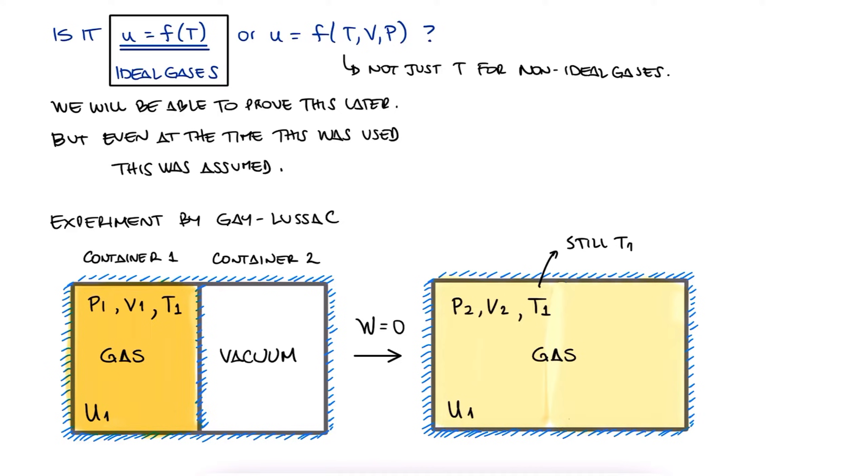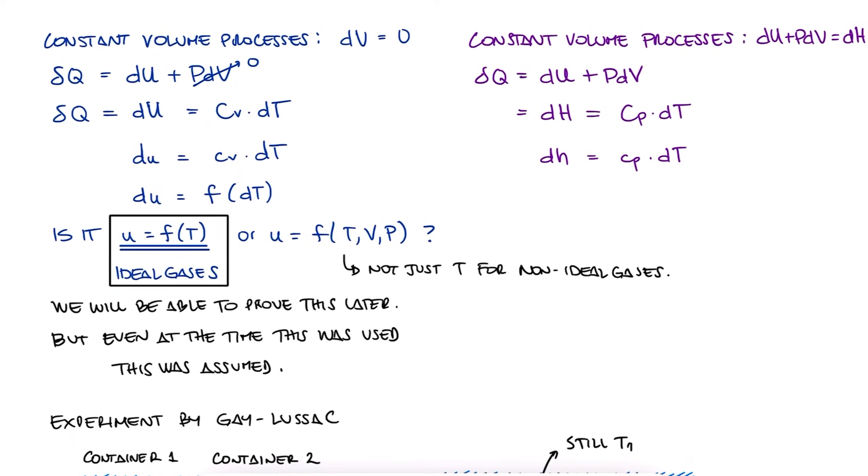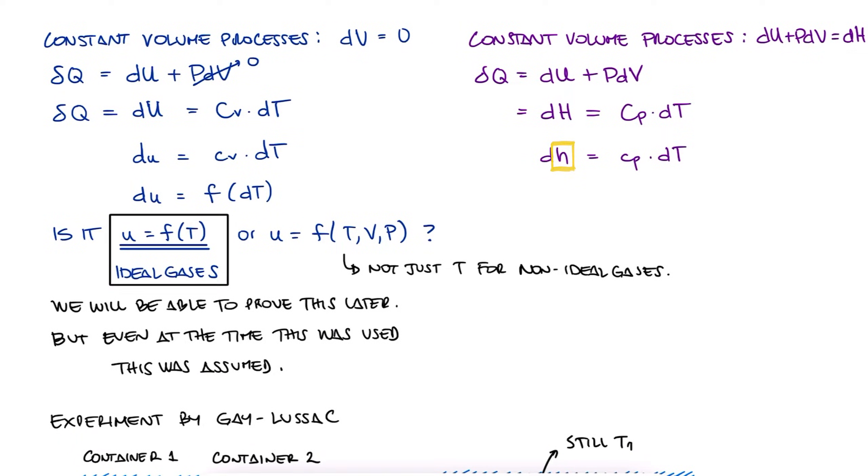So the internal energy U is a function of T only. What about enthalpy H? Well, since H is defined as U plus PV, link below to that 12 minute lecture, and PV equals RT for ideal gases, H equals to U plus RT.